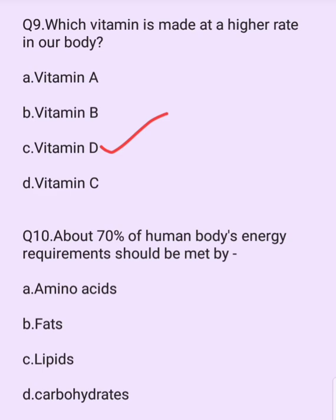About 70% of the human body's energy requirements should be met by which nutrient? Options are: amino acids, fats, lipids, carbohydrates. The answer is option D: carbohydrates.